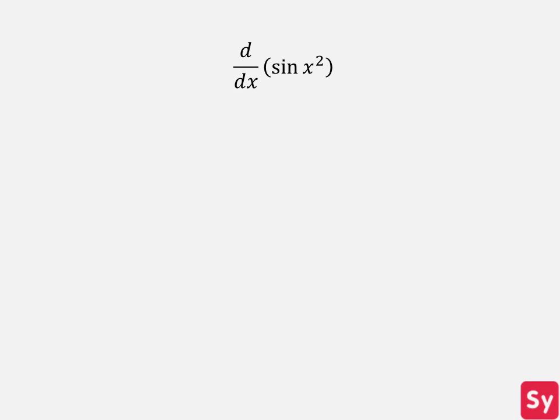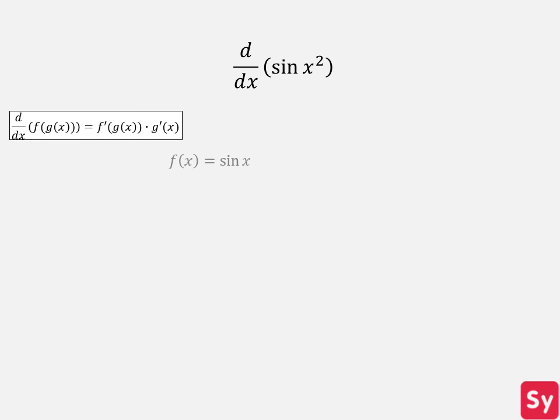Next example, we want to compute the derivative of sine of x squared. We use the chain rule again for this. The outer function f of x is equal to sine of x and the inner function g of x is equal to x squared. First we will compute the derivative of the outer function. The derivative of f of x is equal to cosine of x. Next we will compute the derivative of the inner function. The derivative of g of x is equal to 2x.